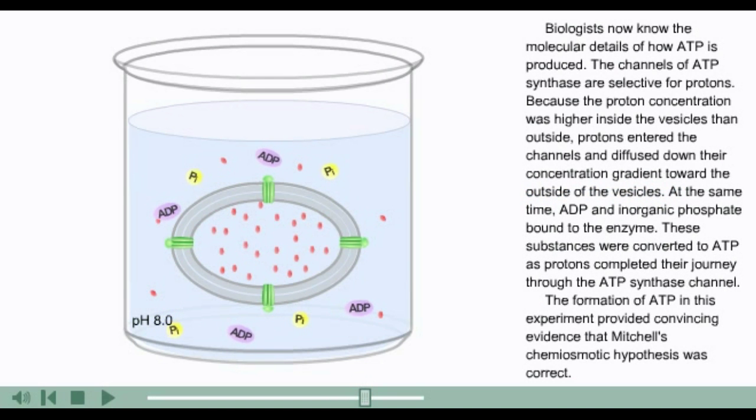Biologists now know the molecular details of how ATP is produced. The channels of ATP synthase are selective for protons. Because the proton concentration was higher inside the vesicles than outside, protons entered the channels and diffused down their concentration gradient toward the outside of the vesicles. At the same time, ADP and inorganic phosphate bound to the enzyme. These substances were converted to ATP as protons completed their journey through the ATP synthase channel.